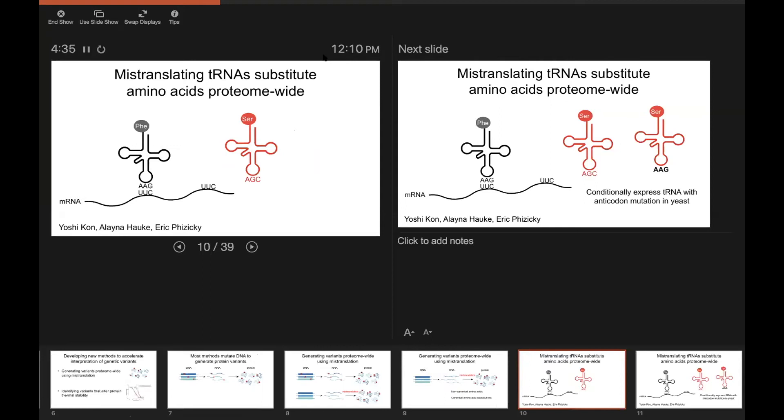The way we do this is by introducing these mistranslating tRNAs into the cell or tRNAs that cause errors in translation causing a swap from one amino acid to the other. And so to remind people, the tRNA is the actual link between the genetic code and the amino acid sequence. And it brings the correct amino acid to the translational machinery by base pairing at the anticodon sequence.